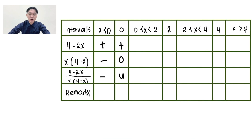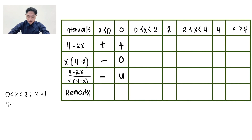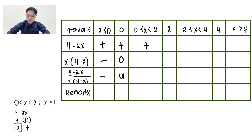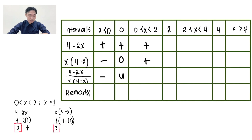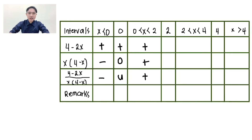For 0 less than x less than 2, let's try positive 1. Evaluate 4 minus 2x: 4 minus 2 times 1. The answer is positive 2, sign is positive. For x times the quantity of 4 minus x: 1 times the quantity of 4 minus 1. The answer is positive 3, sign is positive. Positive divided by positive is positive. Proceeding to positive 2.